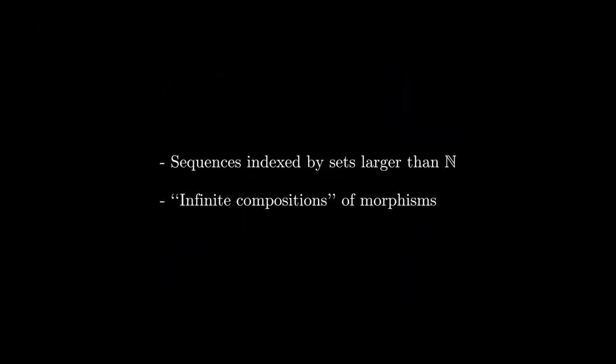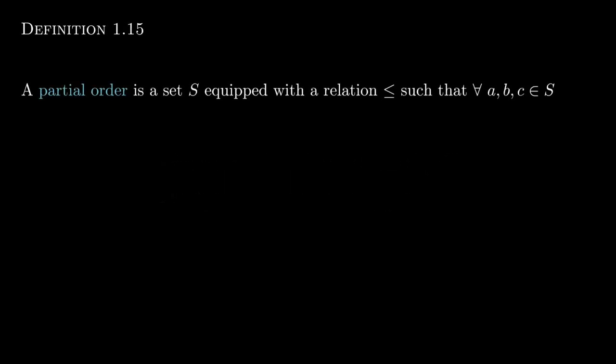The remainder of our discussion will focus on two goals. First, how do we think about sequences that are indexed by sets larger than the natural numbers? And second, how do we think of morphisms that are, in a sense, infinite compositions of morphisms? In a category, you're only guaranteed that finite compositions of morphisms are morphisms. You're not guaranteed that an infinite composition exists, but we'll see how there are morphisms that behave in that way.